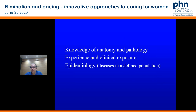I just wanted to go through a few things that make dissecting that a little bit easier. It's really important that we think about when we have the patient coming through the door: the knowledge of anatomy and pathology, the experience and clinical exposure that we've all had to work these patients out, and then think about it in terms of epidemiology — what diseases in those different age brackets are most likely to occur.